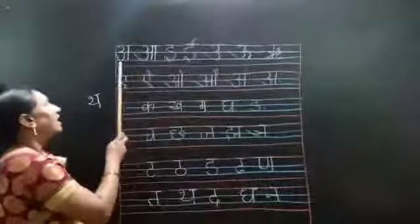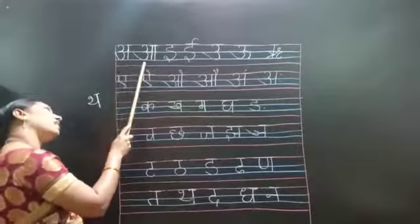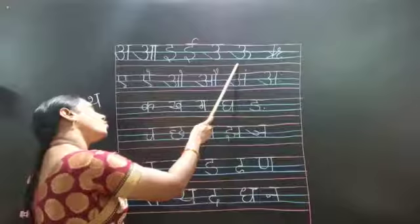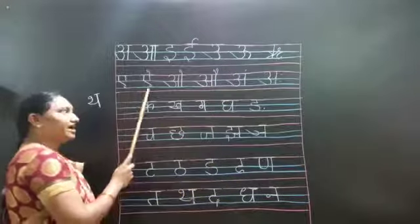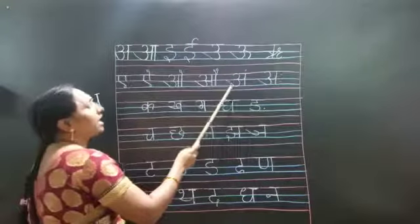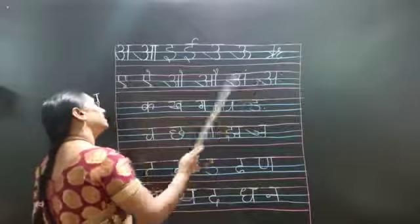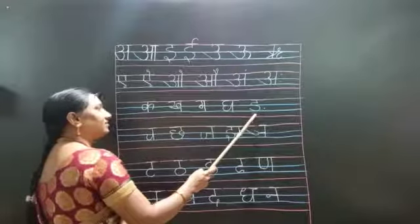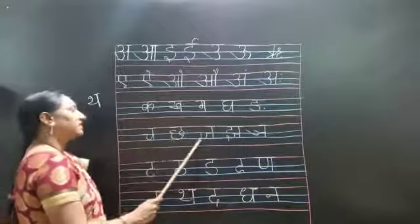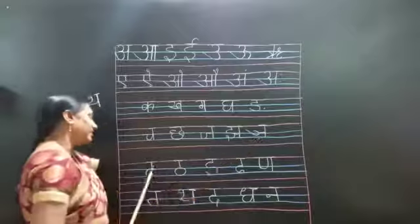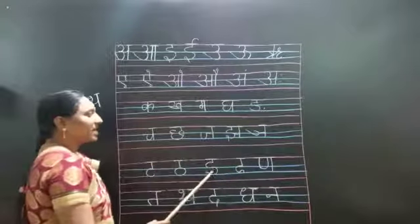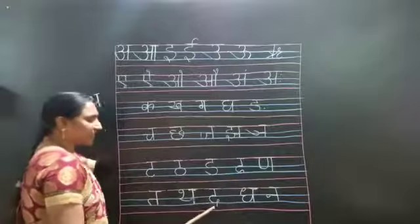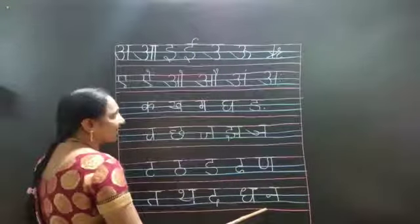Shall we read? A to Na. A, A, A, I, I, U, U, E, I, O, Ao, A, A, Aha, K, K, G, G, G, Inya, Cha, Cha, Cha, Inya, Ta, Tha, Da, Dha, Dha, Ta, Tha, Dha, Na, Dha, Dha, Na.